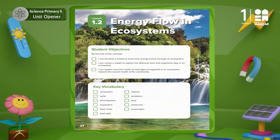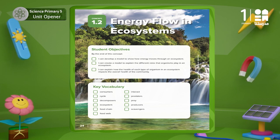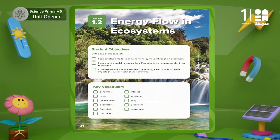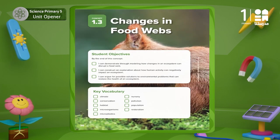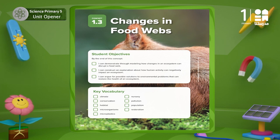In concept 2, energy flow in ecosystems, we will focus on the interactions between organisms in the ecosystem and understand more about how energy flows within food webs. In the last concept, we will study the changes in food webs together, tracing how the disappearance of an organism from the food webs can affect the ecosystem as a whole.